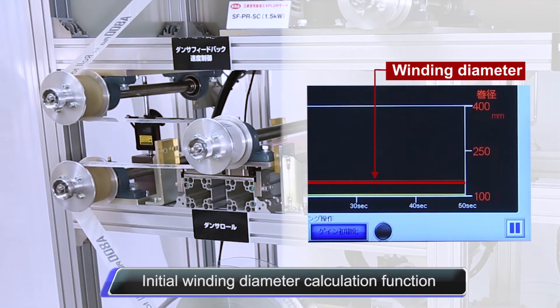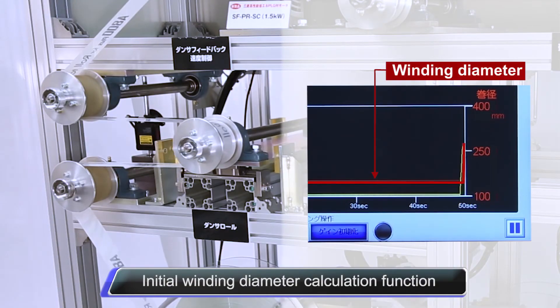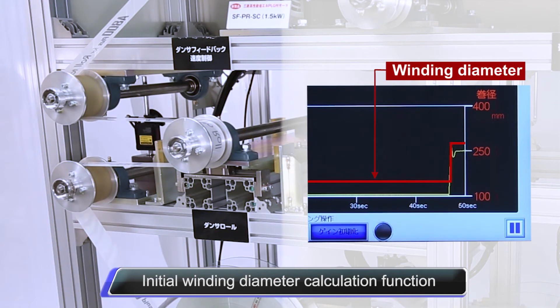The initial winding diameter calculation function calculates the current winding diameter based on the movement of the dancer roll from its lowest position to the target position.